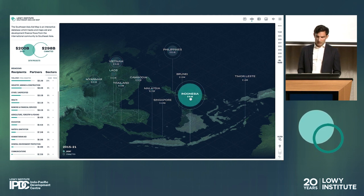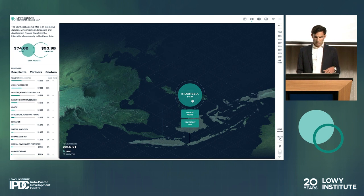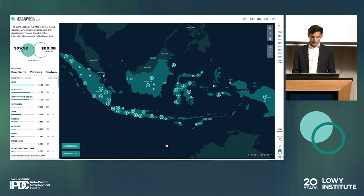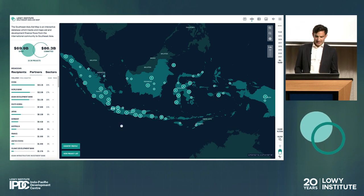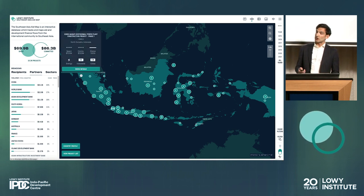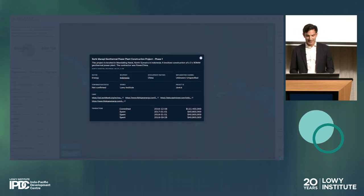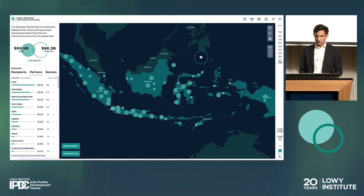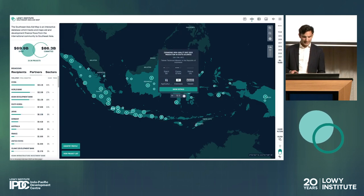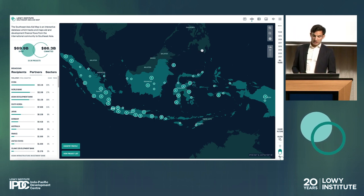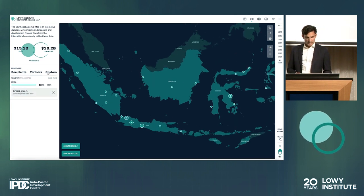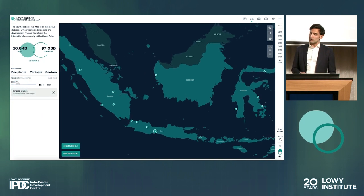Every time you select a Southeast Asian country, you can either look at the detailed analysis we've made on that country, or jump directly to the project map page where you'll see individual projects populating the map. When clicking on a project, additional information is displayed — including the project description, the sector it belongs to, relevant internet links, and the transaction history of that project. From the project map, you can also narrow down your search by selecting a specific development partner or sector, and the map will automatically update with the relevant information.